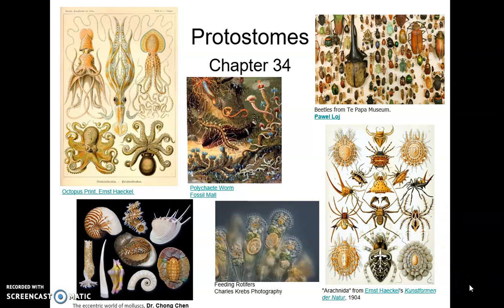Today we're talking about protostomes. We are going to introduce protostomes and then talk about two major groups, the flatworms and the rotifers. All bilaterally symmetrical organisms break down into either protostomes or deuterostomes. They differ in their embryological development. With protostomes, the blastopore turns into the mouth. A solid group of cells splits from the endoderm into the mesoderm, and then the mesoderm splits internally to form the coelom.